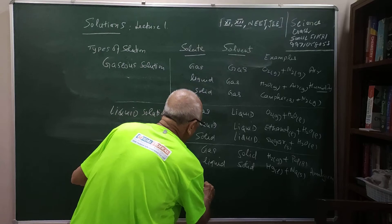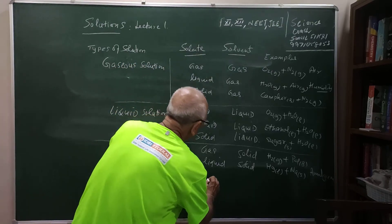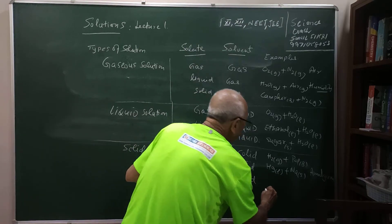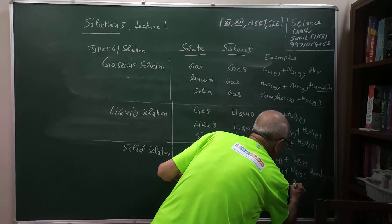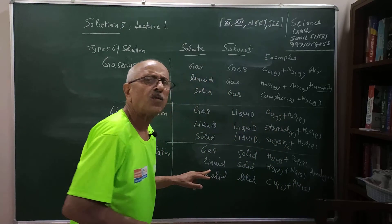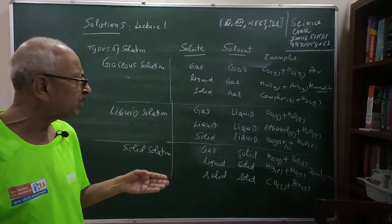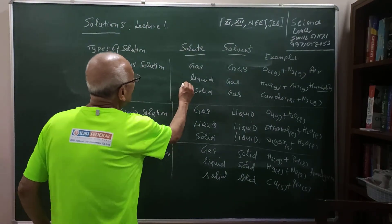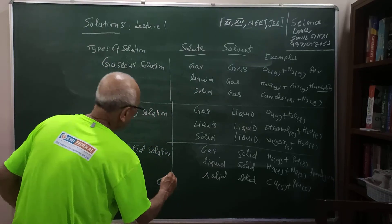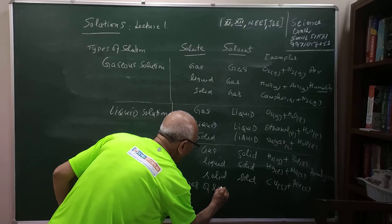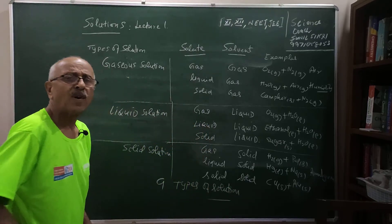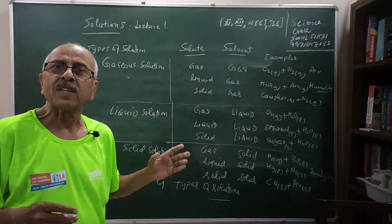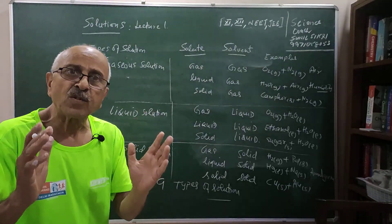Then I can also talk about alloys — solid in solid. For example, if you put copper in gold: 24-karat gold is very pure, and jewellers mix copper in it to make jewelry. So you can see there are 3 plus 3 plus 3 — nine types of solutions in total. In my next lecture, I will talk about the various methods of expressing the concentrations of solutions.